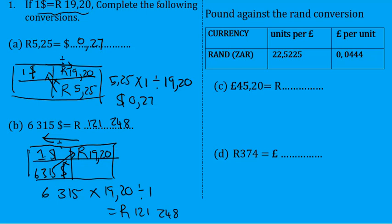Here we've got units. Remember, the part that has 'per' is a one. So it says units per pound, in other words, for one pound, how many units? For one pound it will be 22.5225 rands per pound. Now we can use our criss-cross method again. If we want to exchange pounds for rands, we'll put pounds under pounds. So we've got £45.25.